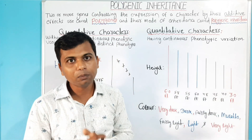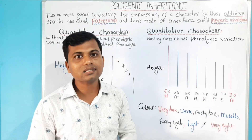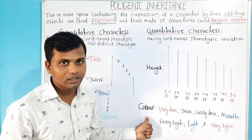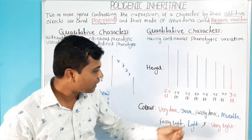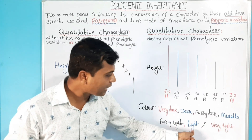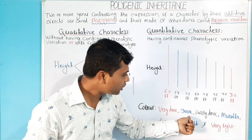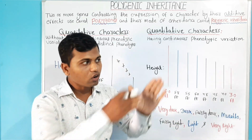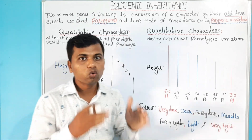Being the height has many phenotypes from tall to dwarf, we say height is a quantitative character. Similarly, in human skin color, there are many different forms of color like dark, fairly dark, mulatto, fairly light, and light, present in between very dark and very light. The presence of these forms of color between very dark and very light makes a continuous phenotypic variation of the color. So, the color is a quantitative character.